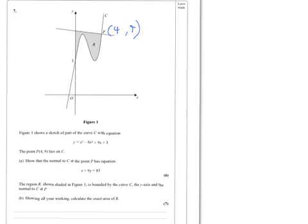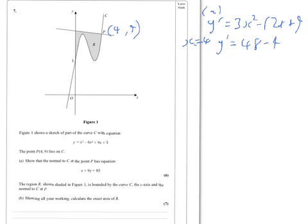Whenever you're finding the normal, the first thing you need to do is find the gradient of the tangent, which is found by differentiating. So for part A we need to find the derivative, which is 3x² - 12x + 9. At x equal to 4, then the derivative equals 3 times 16 minus 12 times 4 plus 9, so the gradient is 9.